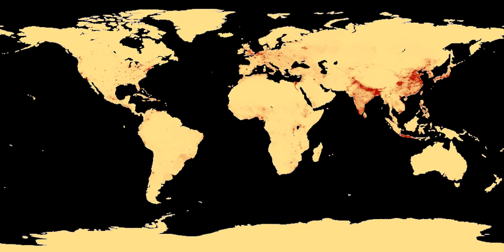The United Nations Population Fund designated 12 October 1999 as the approximate day on which world population reached 6 billion. This was about 12 years after world population reached 5 billion in 1987, and 6 years after world population reached 5.5 billion in 1993. The population of countries such as Nigeria is not even known to the nearest million, so there is a considerable margin of error in such estimates. Researcher Carl Hobb calculated that a total of over 100 billion people have probably been born in the last 2,000 years.